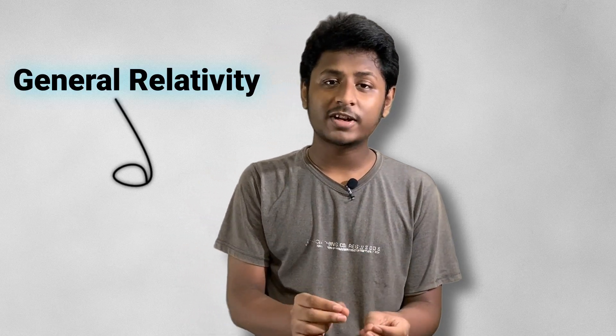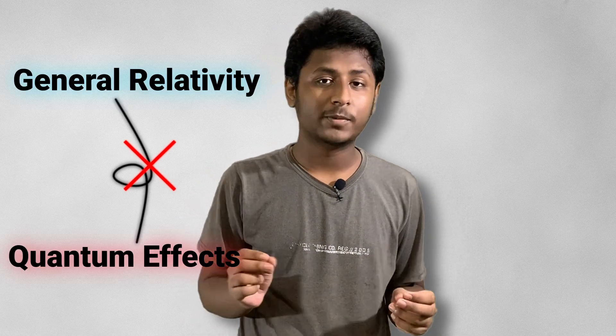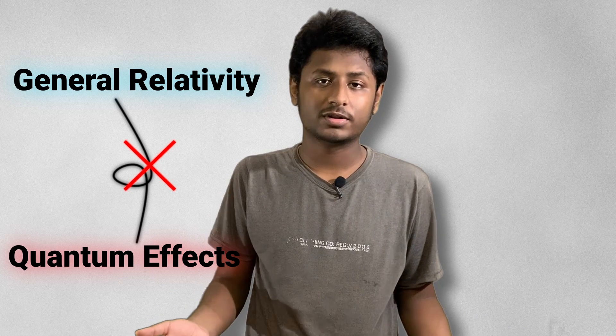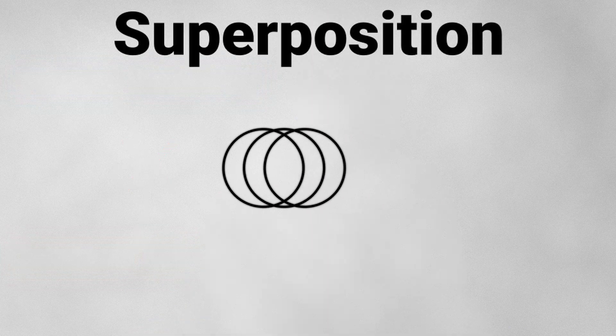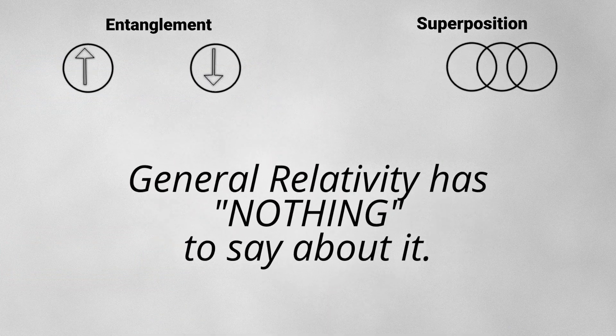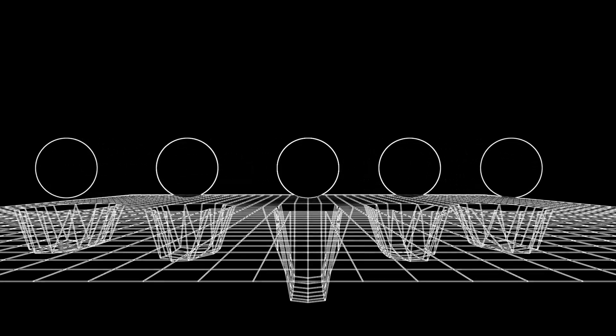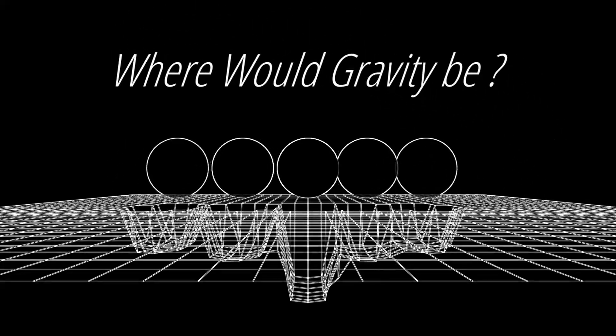So why do we think that it can't be how gravity fundamentally works? Well, because general relativity doesn't take into account quantum effects, which we know to exist in the universe. Superposition, entanglement — general relativity has nothing to say about them. For example, if an electron can be in a superposition of being at multiple places at once, where would gravity be?